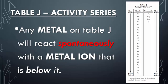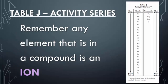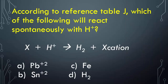Any metal on Table J will react spontaneously if it's with a metal ion that is below it. This means that the metal with a charge must be below the neutral metal for there to be a reaction. Remember, any element that is in a compound is the ion.